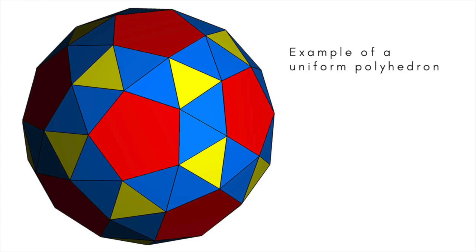A uniform polyhedron is a polyhedron in which each face is regular and each vertex is equivalently arranged. Uniform polyhedrons include the Platonic solids, the Archimedean solids, the prisms and antiprisms, and the concave uniform polyhedrons.